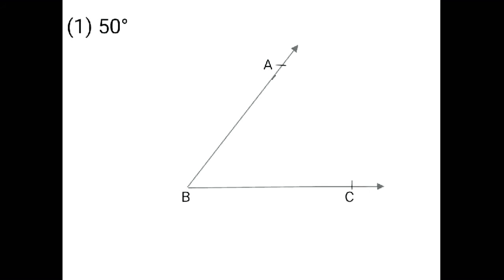Now from point B, you have to draw the arc of a circle. You have to keep your rounder on point B and then draw the arc of a circle like this. An arc is the small part of a circle. You can name this arc point O and point P.